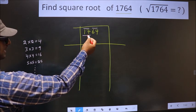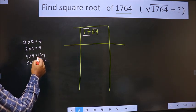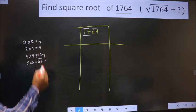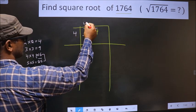And here we have 17. 17 lie between these two numbers. So we take the smaller one that is 16. So that is 4 x 4, 16.